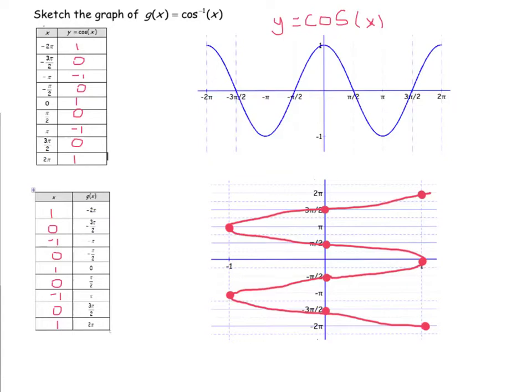If we try to find the inverse of cosine, the issue we have, if you look at the bottom graph here, is that it fails the vertical line test, so it's not a function. So let's fix that the same way we fixed that issue when we were finding the appropriate graph for the inverse sine graph.